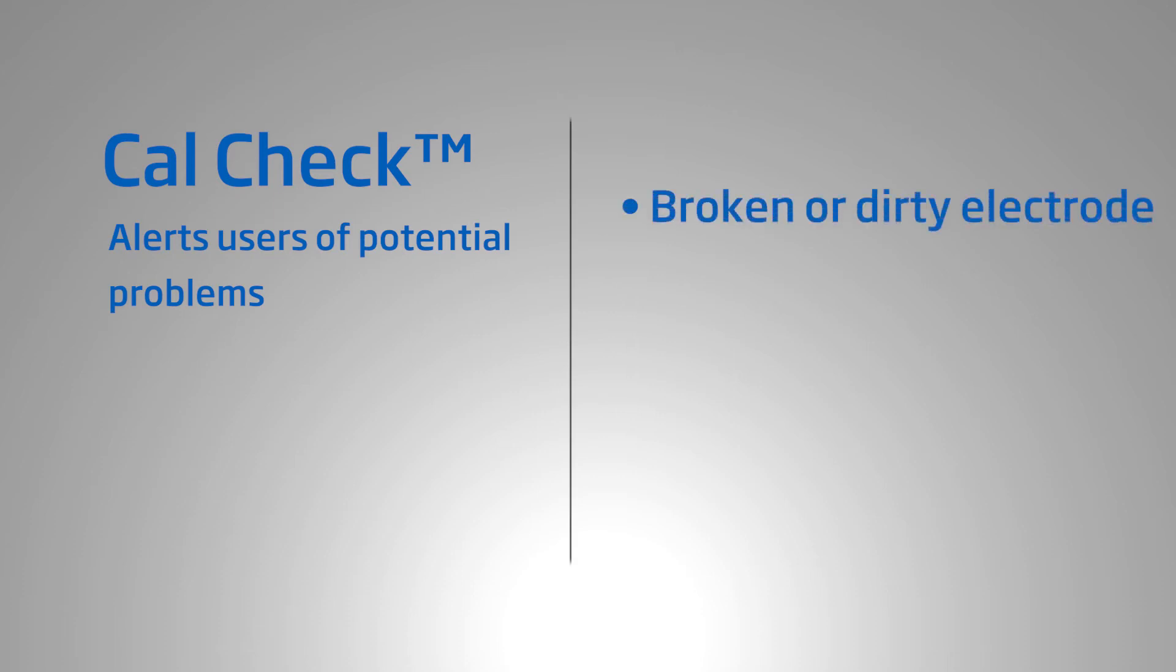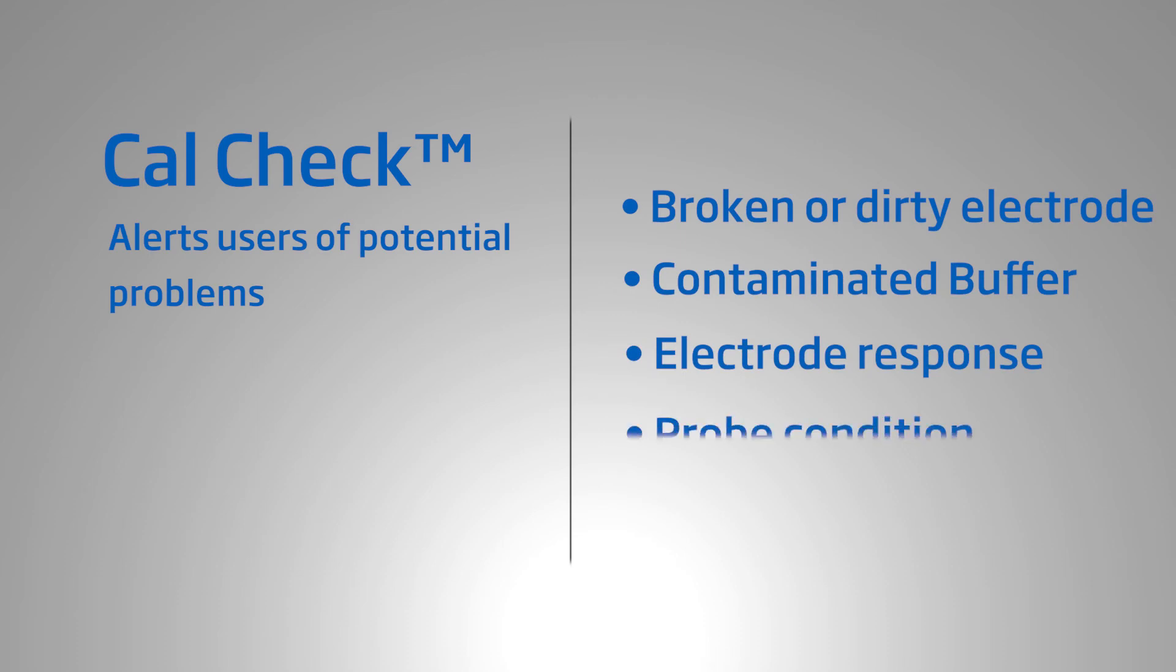A unique feature this meter offers is Hanna's CalCheck. CalCheck alerts users to potential problems during the calibration of the pH electrode like a broken or dirty electrode, contaminated buffer, electrode response time, and the overall probe condition as a percentage that is based on the offset and slope characteristics.